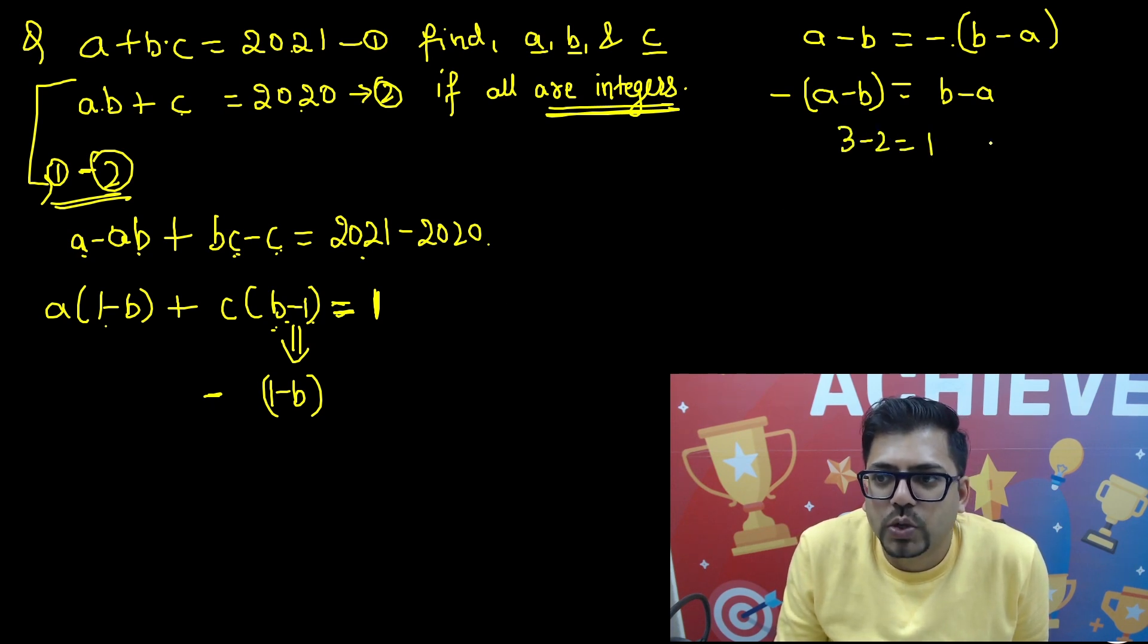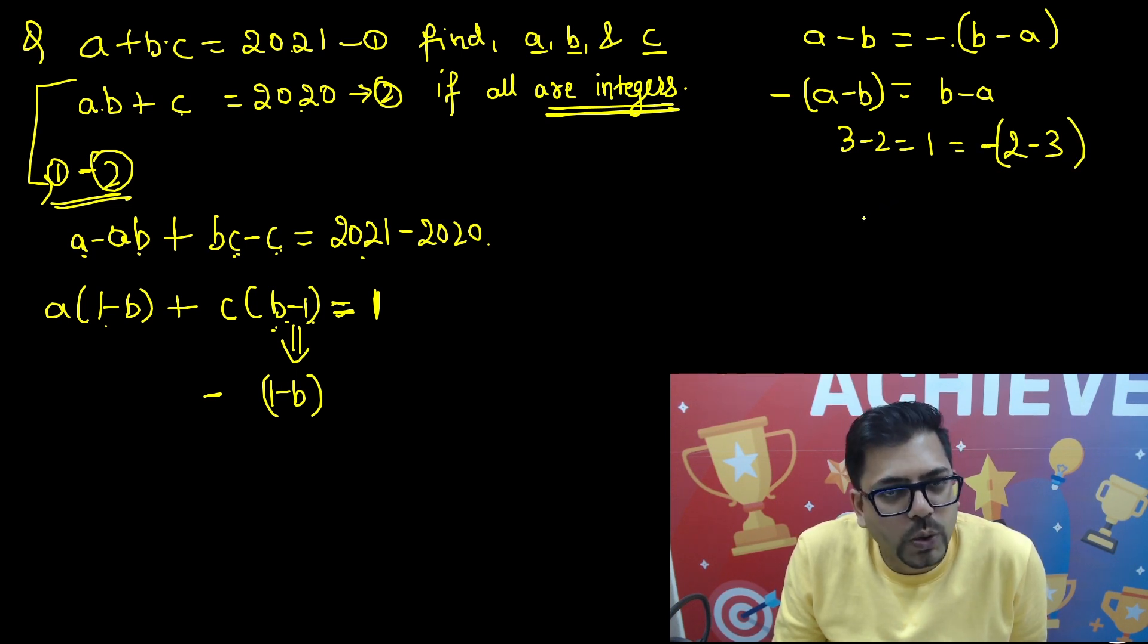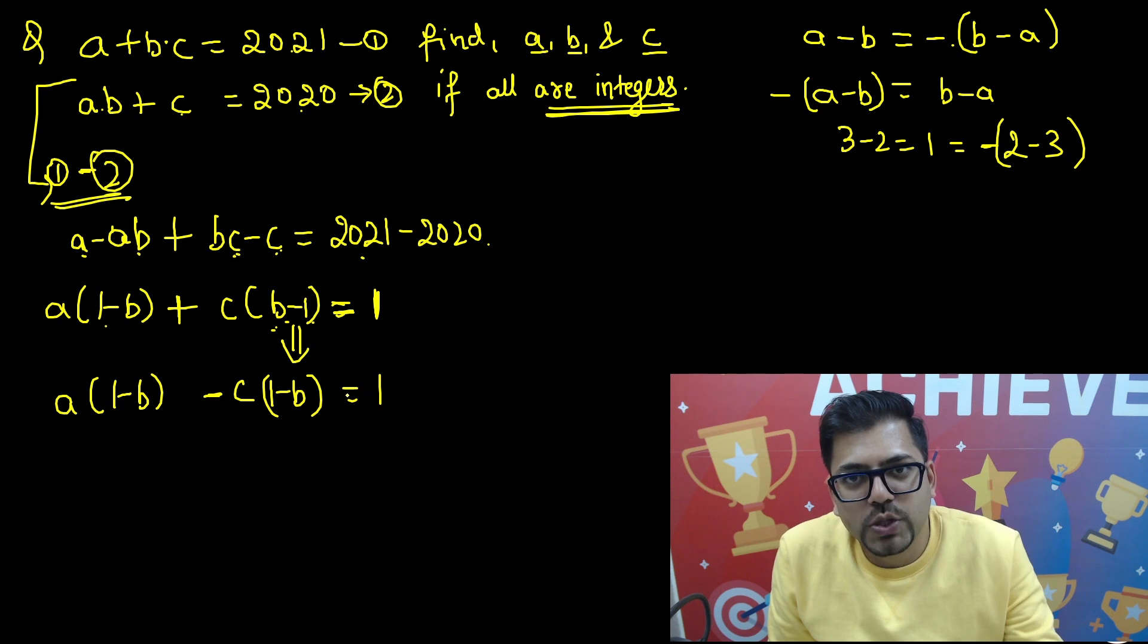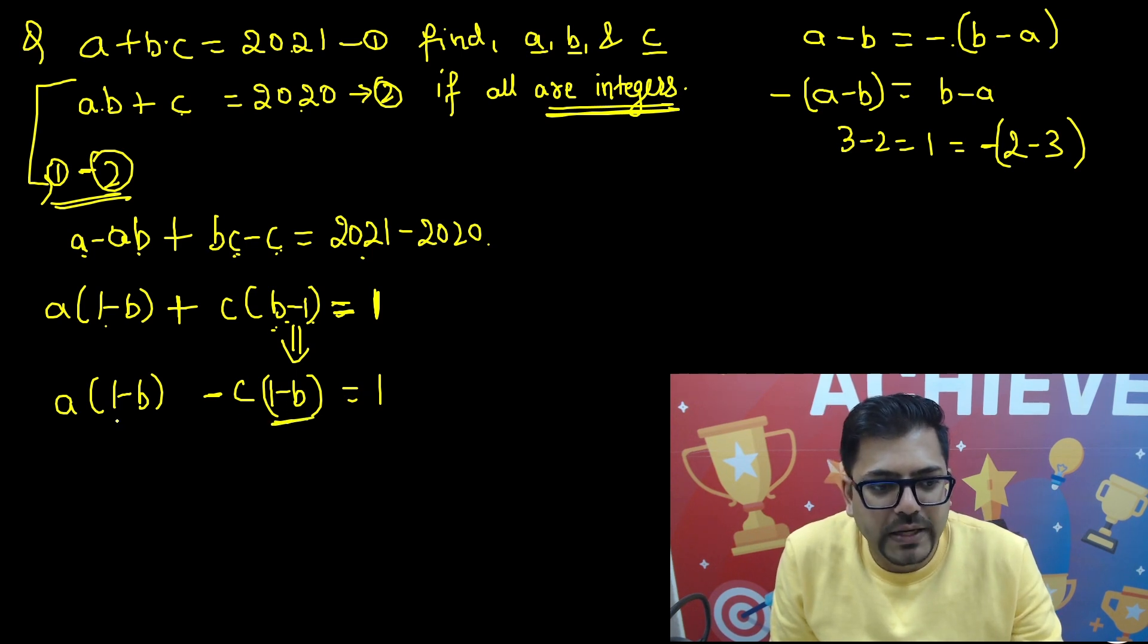Now look carefully. A times 1 minus B and here we have B minus 1. I guess you understand that A minus B and B minus A, they are the same thing only with a negative. So B minus 1 can be written as 1 minus B only if I provide a negative here. It's the same thing.